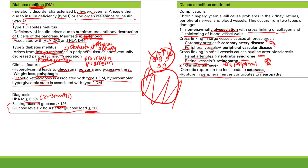Neuropathy — what symptoms would you get? It's everything: autonomic symptoms, motor symptoms, sensory symptoms. The key thing is it's in a stocking and glove distribution.